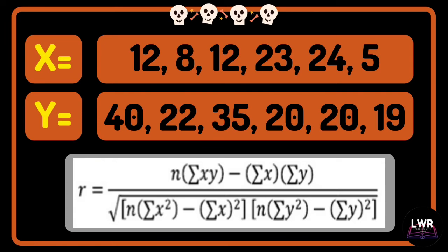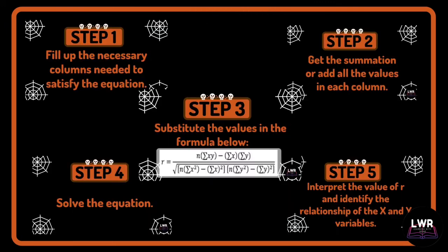Pause this video and answer the word problem using the five steps in solving Pearson's correlation coefficient. Step 1: fill up the necessary columns. Step 2: get the summation. Step 3: substitute the values. Step 4: solve the equation. And Step 5: interpret the value of r and identify the relationship of x and y variables.